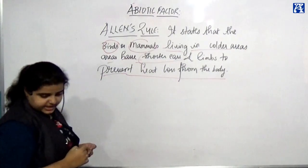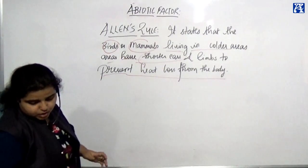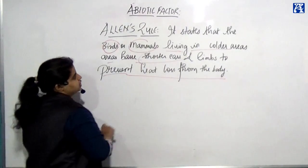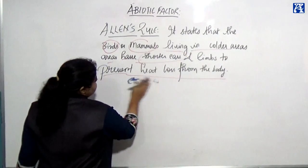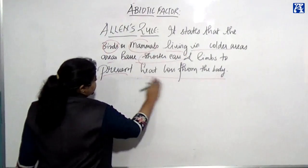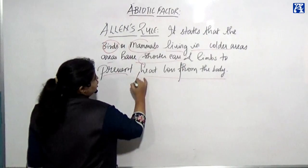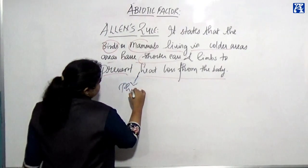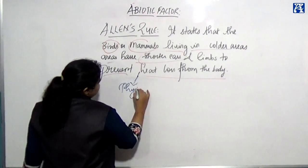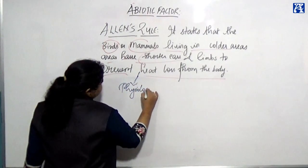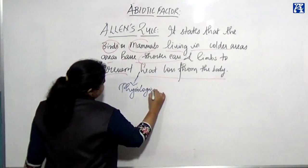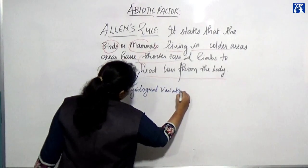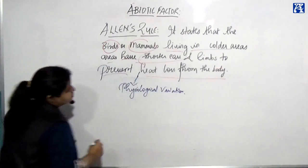This type of variation seen in Allen's rule can be called a morphological variation — or more precisely, a physiological variation.